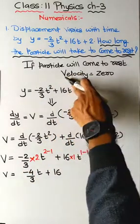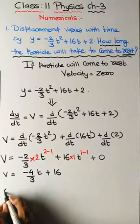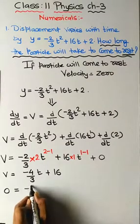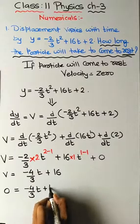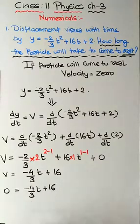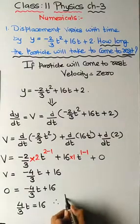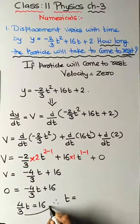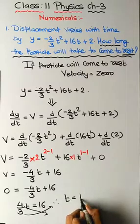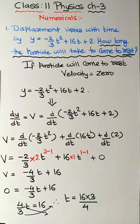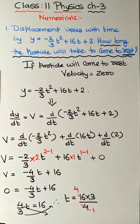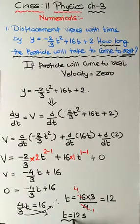Now applying our condition: the particle is at rest when velocity equals zero. Setting v = 0 gives 0 = -4/3 t + 16. Taking 4/3 to the other side: 4/3 t = 16. Cross-multiplying gives t = 16 × 3 / 4 = 12. So the time is 12 seconds.